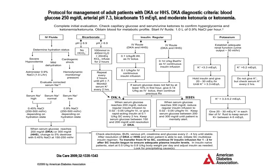The management approach for both HHS and DKA follows a similar line with little differences, as both represent hyperglycemic crisis states. Both conditions need intravenous fluid therapy, insulin therapy, and potassium therapy, plus or minus bicarbonate therapy. Bicarbonate is usually only needed in DKA in the context of very severe acidosis and is rarely needed in clinical practice.